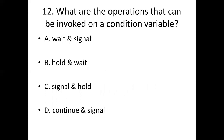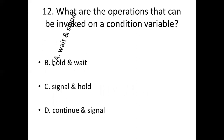Twelfth bit. What are the operations that can be invoked on a condition variable? Option A: Wait and signal. Option B: Hold and wait. Option C: Signal and hold. Option D: Continue and signal. Answer: Option A, Wait and signal.